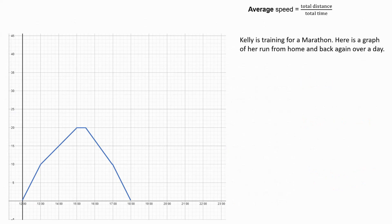You may be asked to work out the average speed over a journey. This graph shows us the distance that Kelly runs on the y-axis in kilometres, and along the x-axis we have her time. She's training for a marathon. The graph shows her run from home and then back again. We can see that she returns home because the graph finishes at a distance of zero.